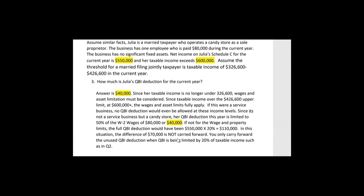The difference of $70,000 is not carried forward. You only carry forward the unused QBI deduction when QBI is being limited by 20% of taxable income, as we saw in question two. In question three, we jumped taxable income from $180,000 to over $600,000 to show the extreme situation — what happens when taxable income is well above the upper limit of $426,600, where the wage limitation reduces the deduction to just $40,000 with no carryover allowed.